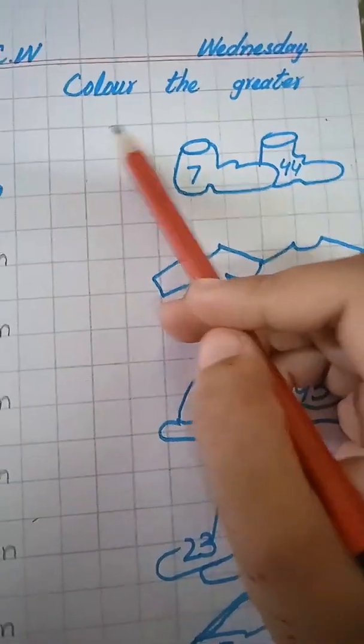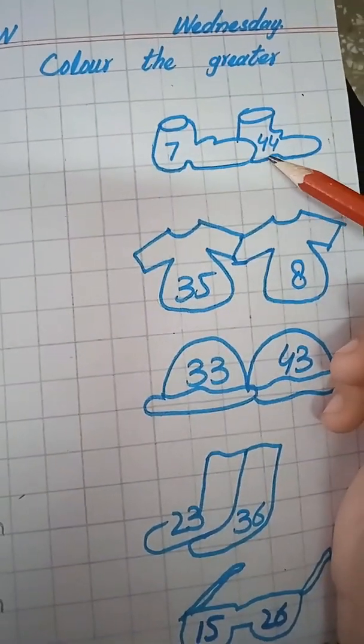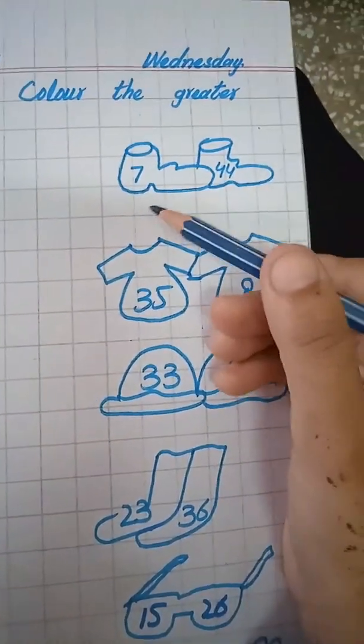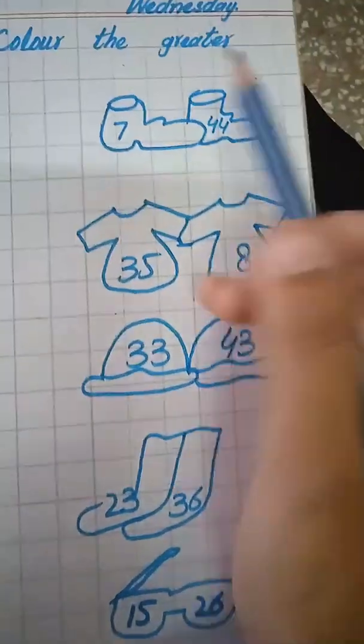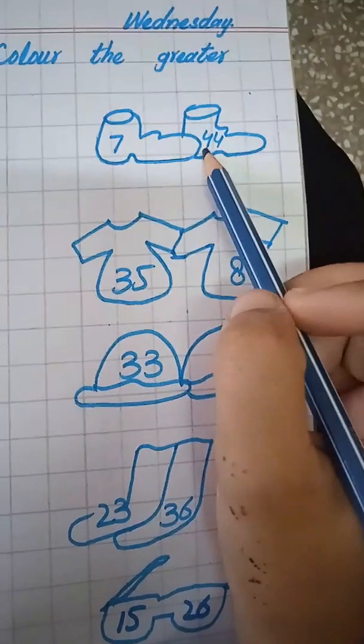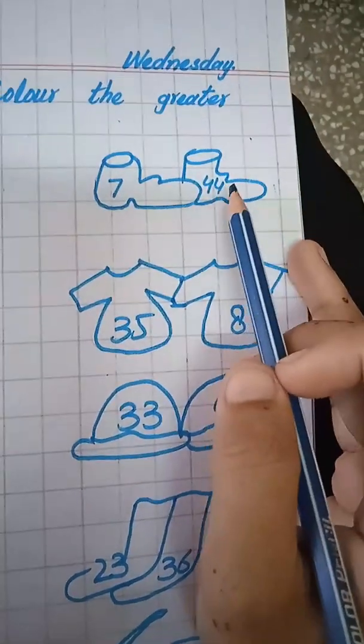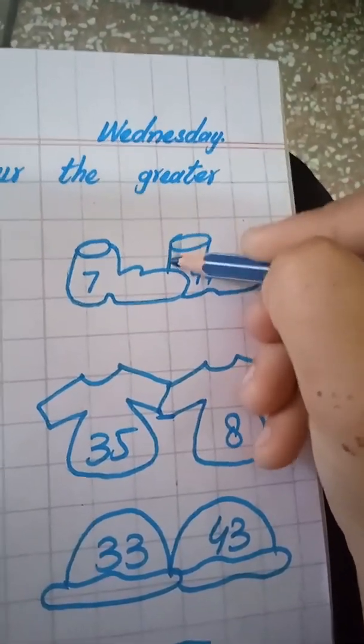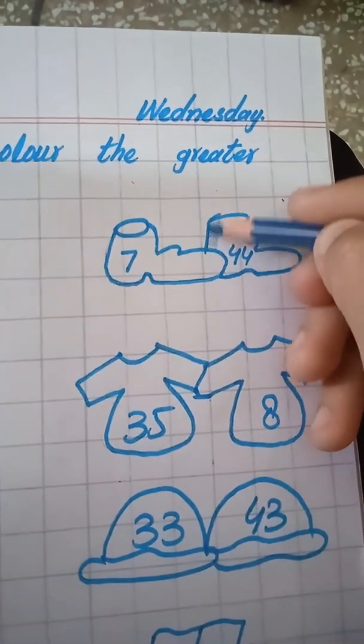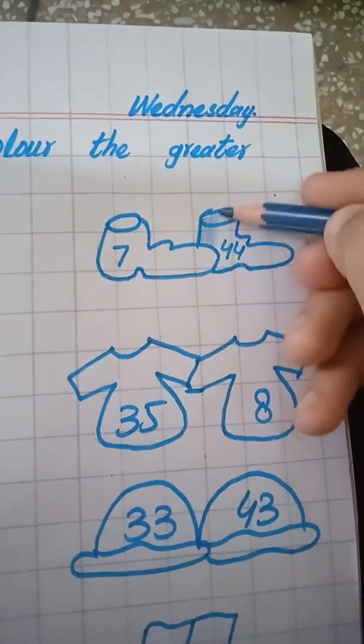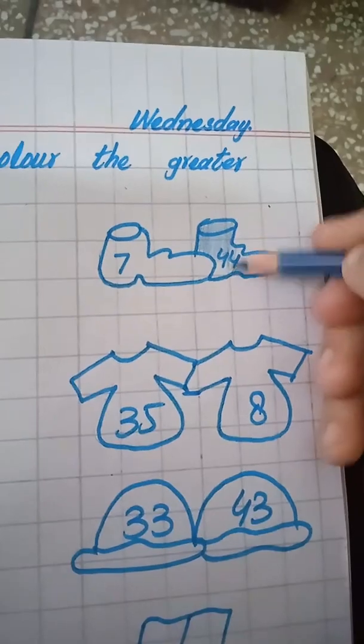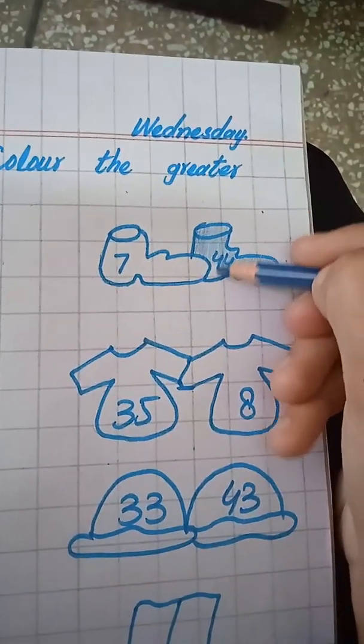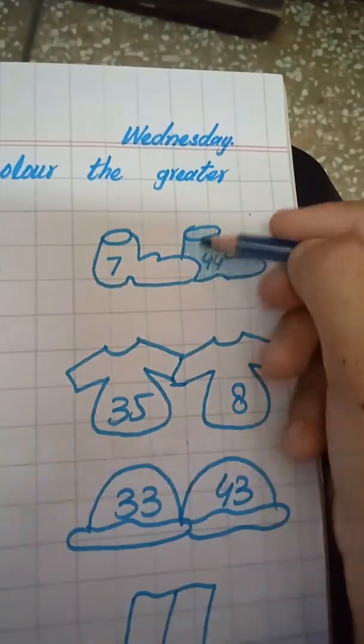Look at the next activity. Color the greater. We have to color the greater number. So, hold your color. I am taking blue color. You can take any color by your choice. So, let's start. This is 7 and this is 44. So which number is greater, students? 44 is greater. So we will color 44. Hold the color accurately and color with me. And here we have done.